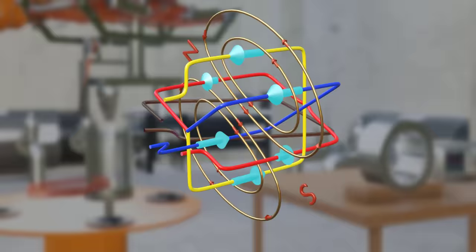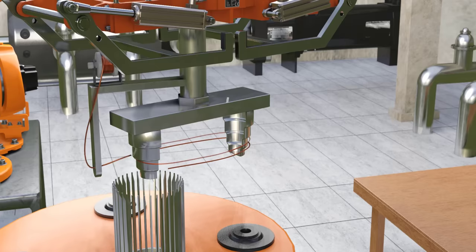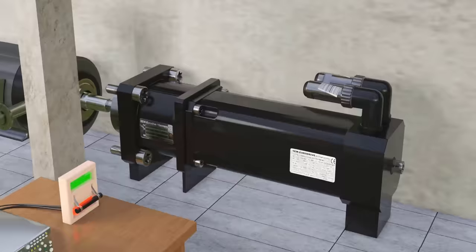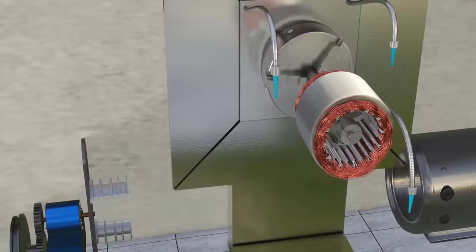Here, we used a single turn for the winding. However, in the industries, they use hundreds of thin cable turns. This will obviously increase the magnetic flux strength. Each of these turns is insulated from the other turns with the help of a liquid varnish lamination.